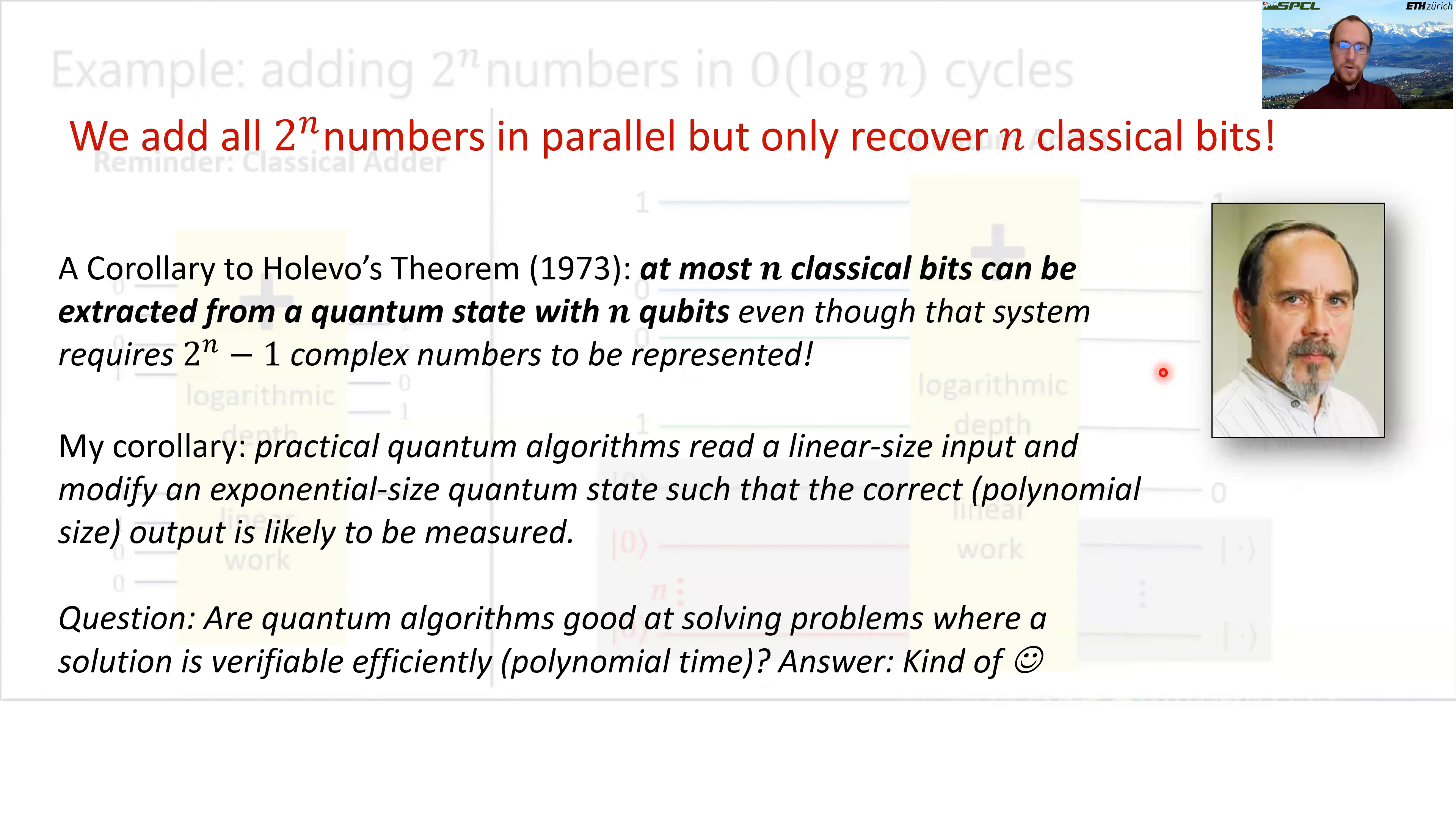That's not such a useful adder. That somewhat generalizes to using Holevo's theorem that essentially at most n classical bits can be extracted from a quantum state with n qubits. This is what we are doing, even though that specific quantum system requires 2^n minus one complex numbers to be represented. My personal view on this, we could have a corollary to this: that the practical quantum algorithm must read a small input in brackets linear size and modify a very large in brackets exponential size quantum state to get a speedup, because these quantum computers are relatively slow compared to classical computers, that the correct polynomial size output in brackets is likely to be measured.